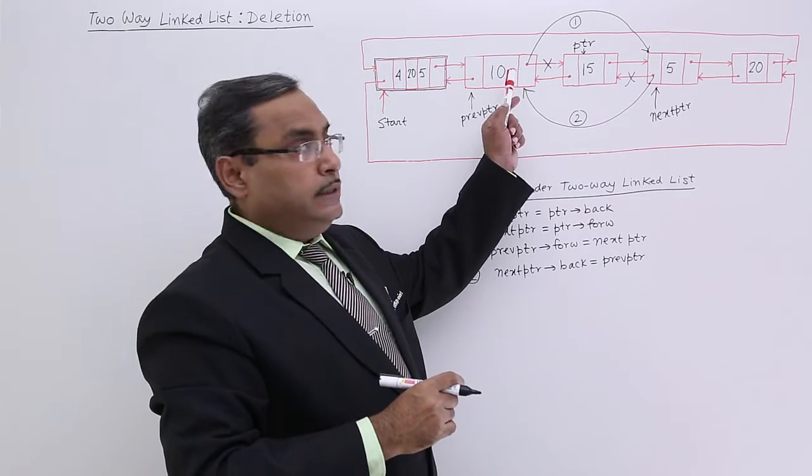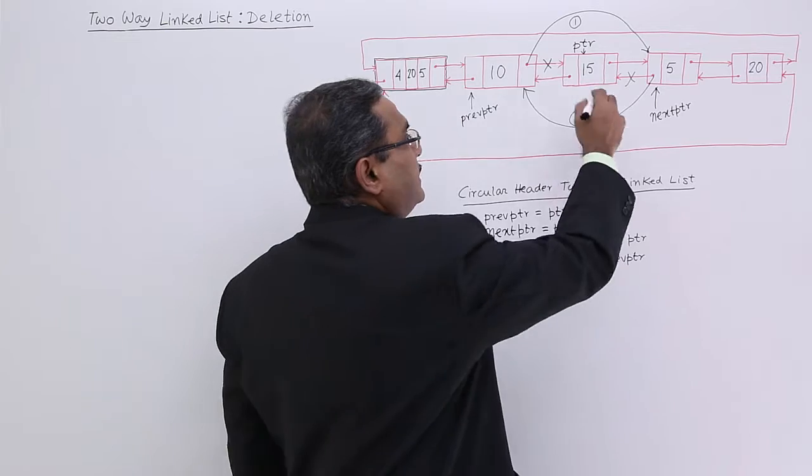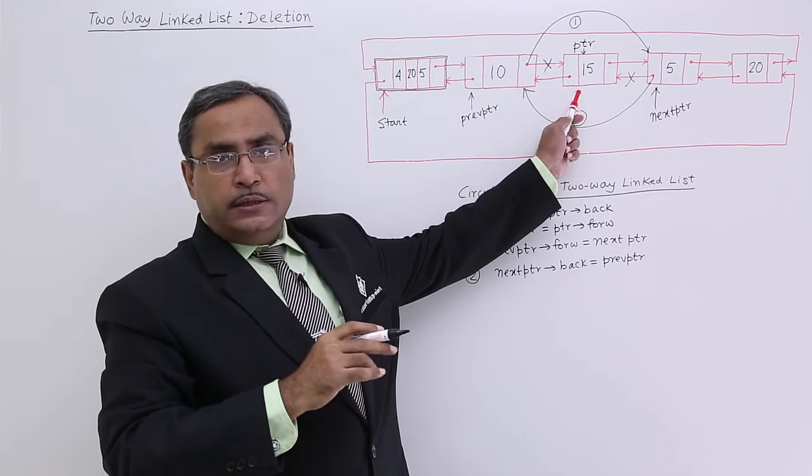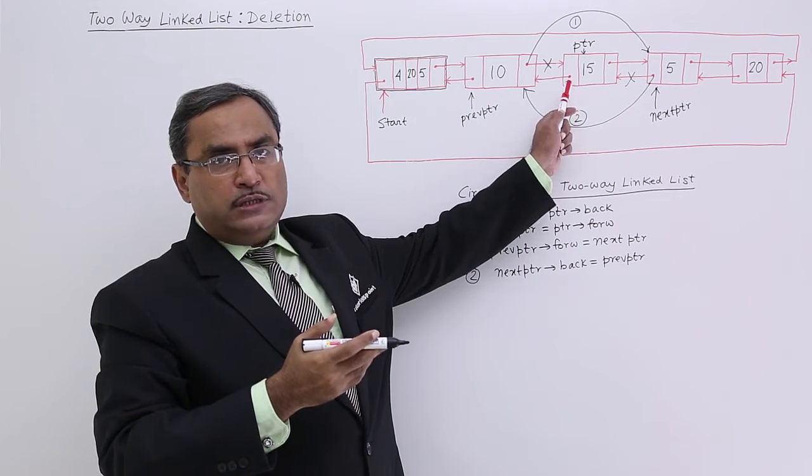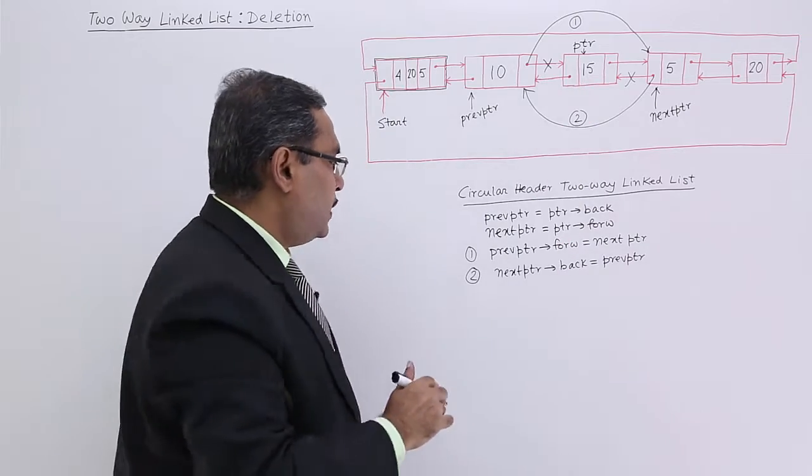Now see it is pointing to this and it is pointing to this. That means these two links have got abolished. Now it can be deleted because if I delete then these two nodes will remain connected. How to delete this one?